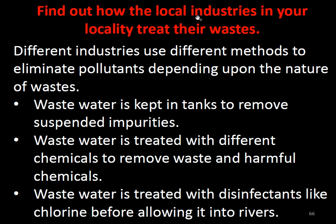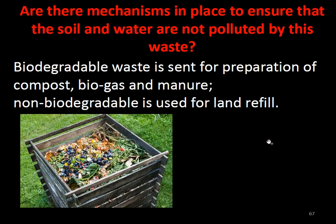How do local industries treat their waste? Different industries use different methods to eliminate pollutants depending upon the nature of waste. Waste water is kept in tanks to remove suspended impurities. Waste water is treated with different chemicals to remove waste and harmful chemicals, and treated with disinfectants like chlorine before being released into rivers. Biodegradable waste is sent for preparation of compost, biogas, and manure, while non-degradable waste is used for landfill.